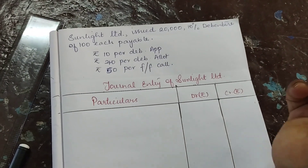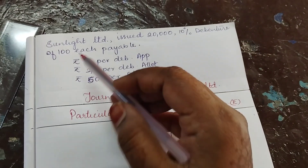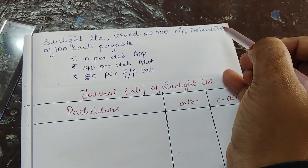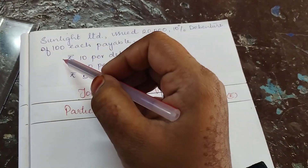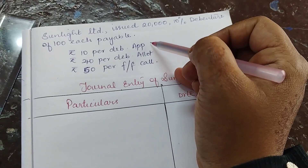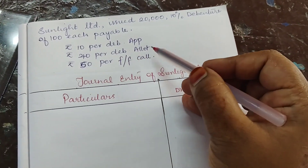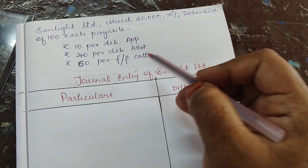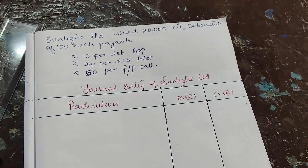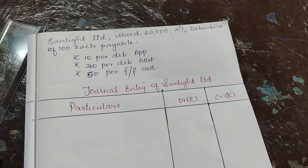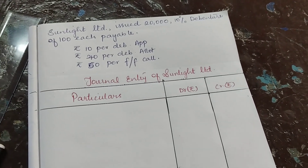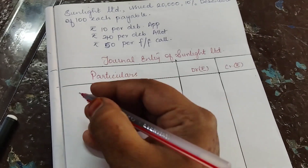Hello friends, welcome back to my channel Quest for Knowledge. Here we have a question: Sunlight Limited issued 20,000 debentures of 10% at ₹100 each, payable as follows — ₹10 on debenture application, ₹40 on debenture allotment, and ₹50 on first and final call. All debentures were duly issued and received. We need to pass the journal entries. This is a 6-marks question, so let's get started.